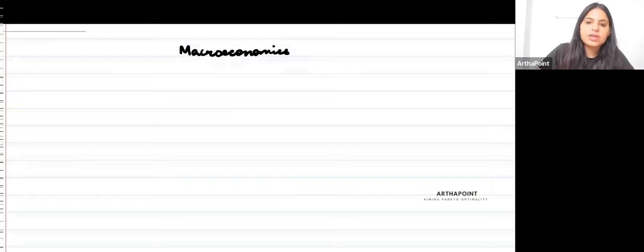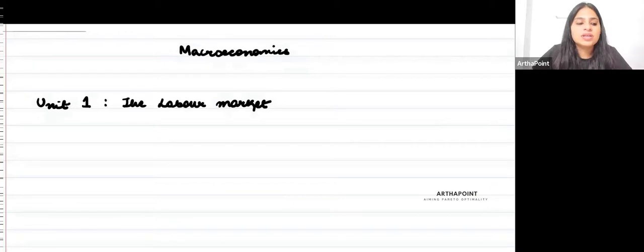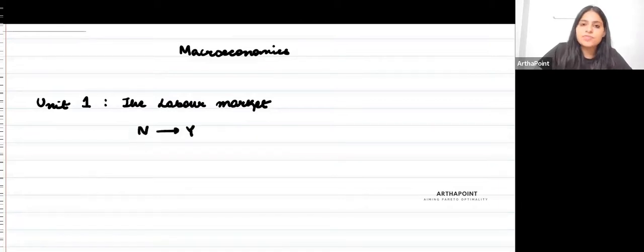To begin with, the entire macroeconomics can be divided into four main units. The first unit is related to the labor market. In this, you would be studying the demand and supply of labor. We will try to understand how wages are determined, what is full employment level, natural rate of unemployment, natural rate of employment, and how you go from employment towards output.